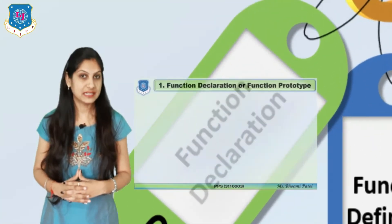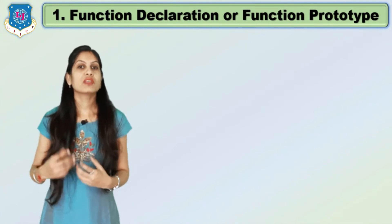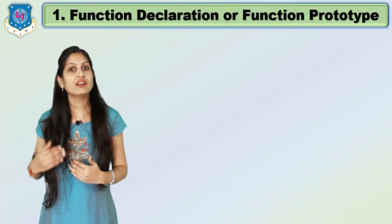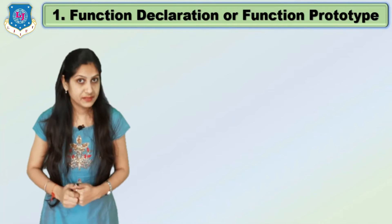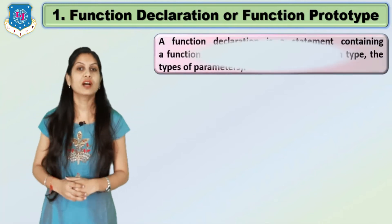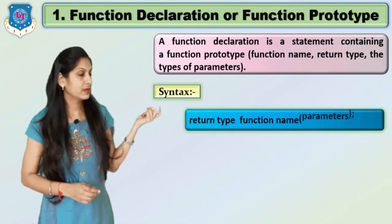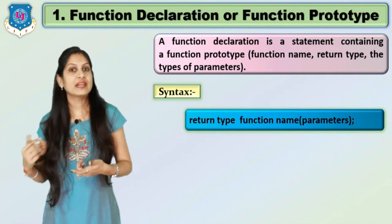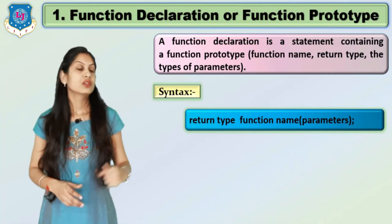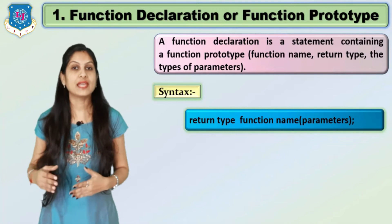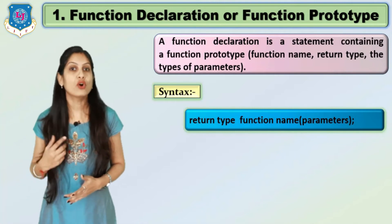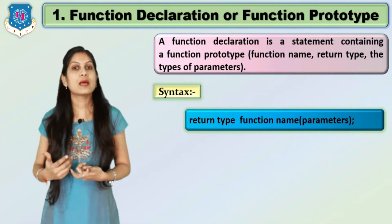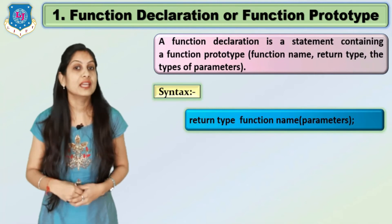Starting with the first element — function declaration. Just as we declare a variable before storing values in it, we must compulsorily declare our own function in the program. The syntax is: return type, then function name, and inside round brackets the parameters (which are optional). The return type is a data type like int, char, float, double, or void. If the return type is void, the function returns nothing; if it is int, the function returns an integer value.